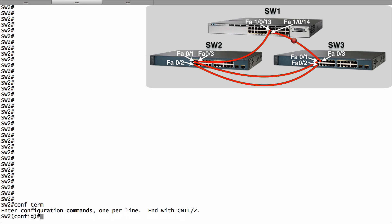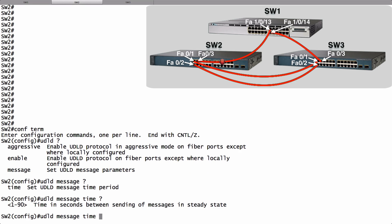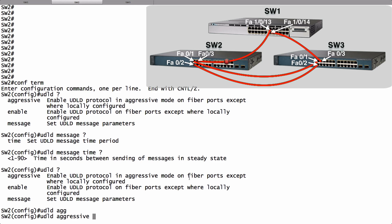We can go into global configuration mode and enable UDLD globally with the UDLD command. Using context-sensitive help, the message option lets us set the interval — how often in seconds we send out a UDLD message. We've got a couple of other options: aggressive and enable. Enable turns on normal mode of UDLD; aggressive is the recommended option. Note that when enabling globally, it only enables UDLD on fiber ports — same thing if we say enable. The recommendation from Cisco is to turn on UDLD globally rather than on an interface-by-interface basis, but realize it will only enable UDLD for fiber ports when done this way.